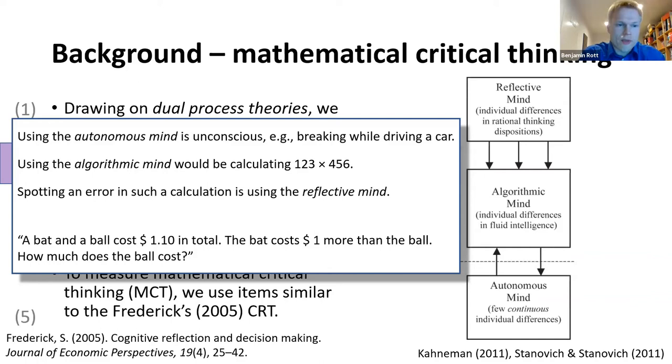Shane Frederick, in his CRT, uses the famous bat and ball task. A bat and the ball cost one dollar and ten in total. The bat costs one dollar more than the ball. How much does the ball cost? So almost everyone has an intuitive answer and says, oh, the ball costs ten cents. And most people are satisfied with this answer and say, okay, give me the next task.